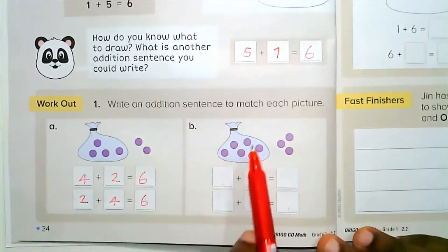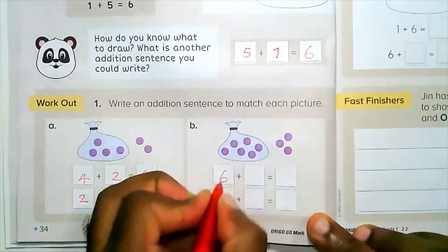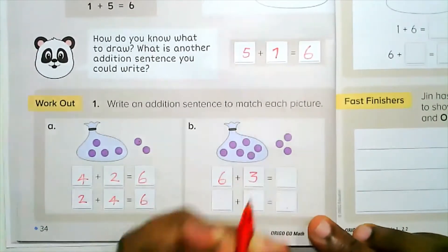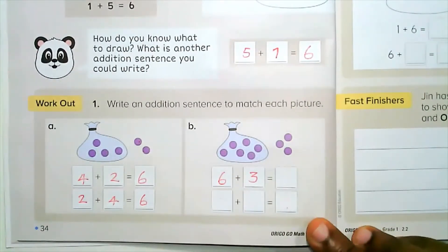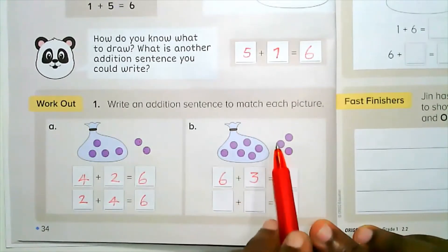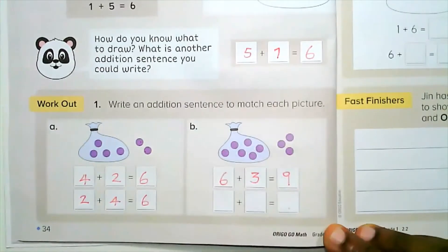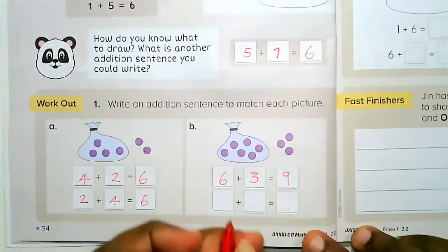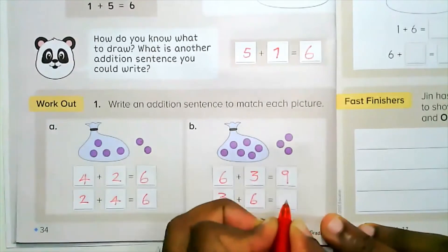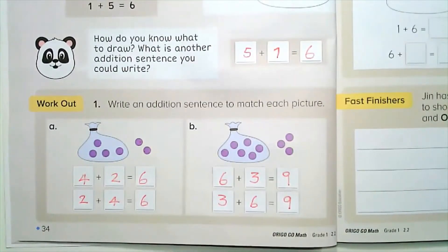Part B: we have one, two, three, four, five, six — write six. Then we have one, two, three — write three. Count on from six: seven, eight, nine — write nine. We can also write it as three plus six makes nine.